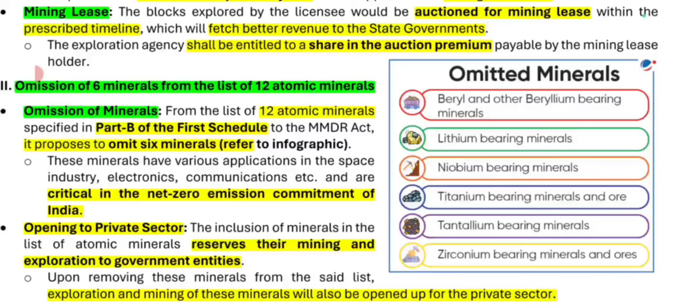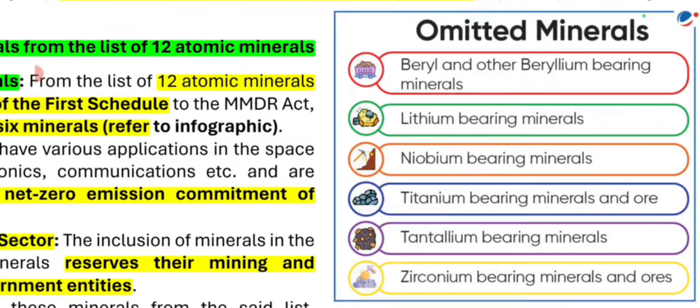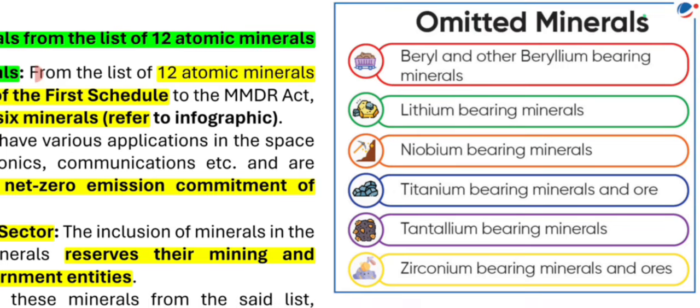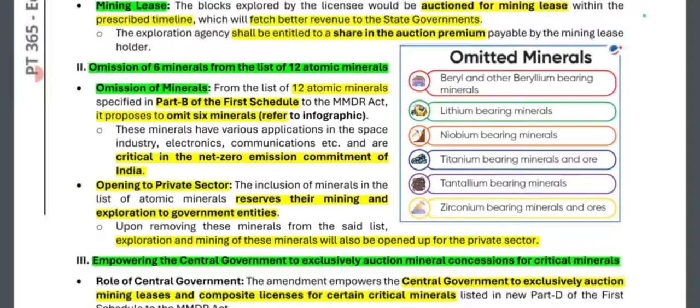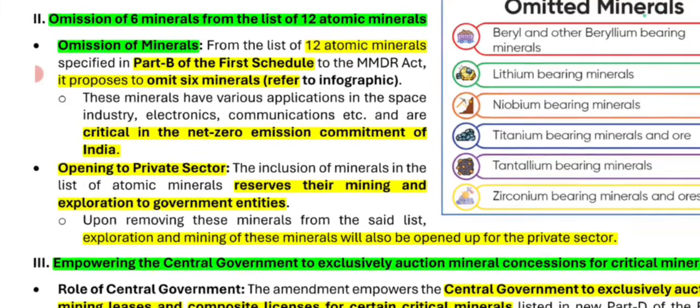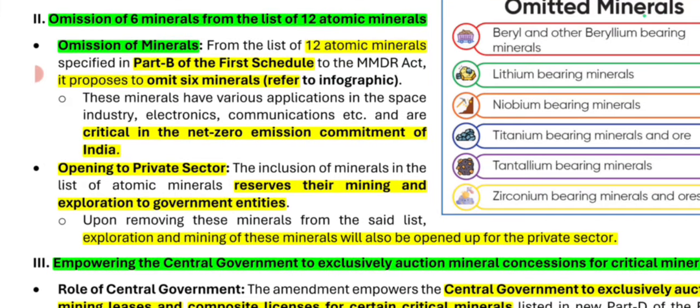Next, there is the omission of 6 minerals from the list of 12 atomic minerals in Part B of the First Schedule. The 6 minerals removed are: beryllium-bearing minerals, lithium-bearing minerals, niobium-bearing minerals, titanium-bearing minerals, tantalum-bearing minerals, and zirconium-bearing minerals. These minerals have applications in space, industry, electronics, and communication, and are critical for net zero emissions — meaning reducing carbon dioxide emissions.